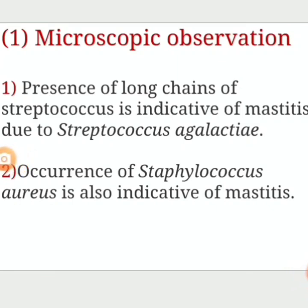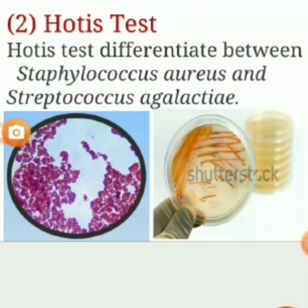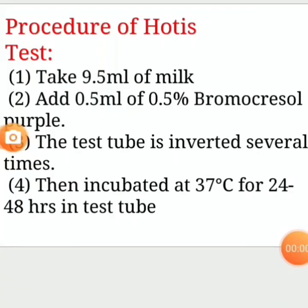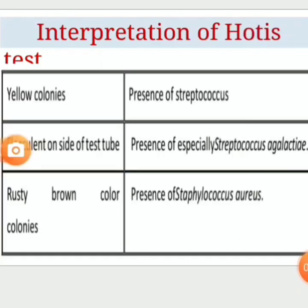Presence of long chains of Streptococcus is indicative of mastitis due to Streptococcus agalactiae. The occurrence of Streptococcus agalactiae is also indicative of mastitis. The Hotis test differentiates between Streptococcus agalactiae and Streptococcus dysgalactiae. Procedure: Take 9.5 ml of milk in a test tube. Add 0.5 ml of 0.5% bromocresol purple. Invert the test tube several times for mixing, then incubate at 37°C for 24 to 48 hours, and observe the color. Presence of yellow color indicates infection with Streptococcus agalactiae, and presence of rusty brown color indicates Streptococcus aureus.